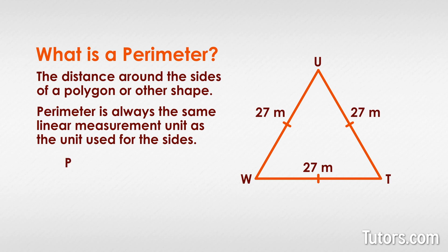To find the perimeter of the triangle, add up the lengths of the three sides, and you get P equals 81 meters. The perimeter of our triangle is 81 meters.